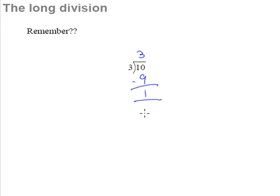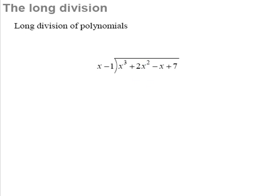What we are going to learn next is the long division for polynomials. For example, let's take a look at this long division of a polynomial. We are going to have x cubed plus 2x squared minus x plus 7 divided by x minus 1. It is very similar to the long division in numbers that we saw earlier.